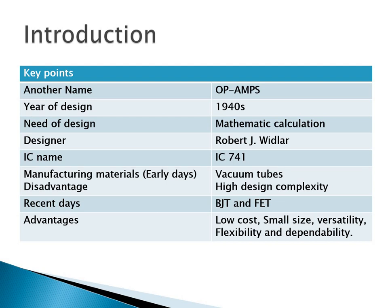Due to the use of vacuum tubes, the early op amps were bulky, power consuming, and expensive. The designer Robert J. Widlar brought out the popular 741 integrated circuit op amp. These op amps are built using BJT and FET — BJT is bipolar junction transistor, FET is field effect transistor. With the help of IC op amps, circuit design becomes very simple. The advantages of IC-based op amps are: low cost, small size, versatility, flexibility, and reliability.